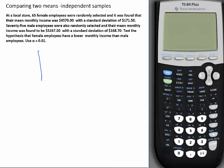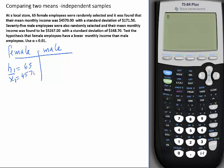We have male and female. Female. How many females? So N1 is 65. What was their mean monthly income from the sample? X bar, and since I have two X bars, so I call this one X bar 1, which is 4,570. And the standard deviation S1 is 171.50.